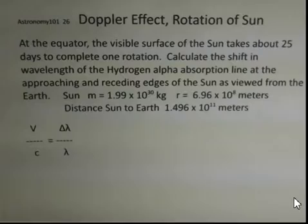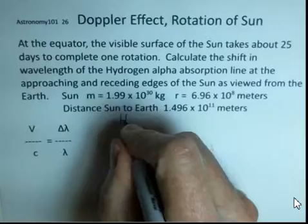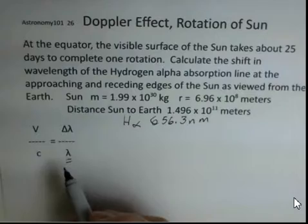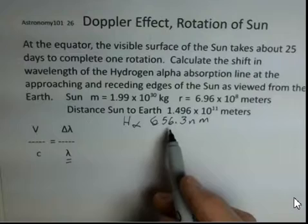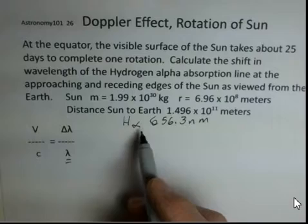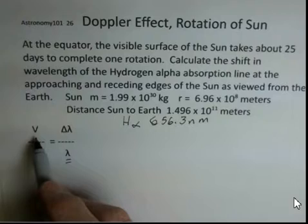We want to do the hydrogen alpha absorption line, which occurs at 656.3 nanometers. We'll be using that for the wavelength. We want to calculate the change in wavelength that's measured for this. This 656.3 would be a situation where the material is not moving away from or towards the earth, and that would be the wavelength of the hydrogen alpha absorption or emission line.